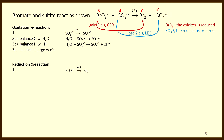Step 3c says balance the charges by adding electrons. On the left-hand side we have a total of negative two; on the right-hand side is zero. So I'll add two negative charges on the right-hand side to balance the charges — now both sides have a charge of negative two. That takes care of the oxidation half-reaction; it is balanced for mass and charge.